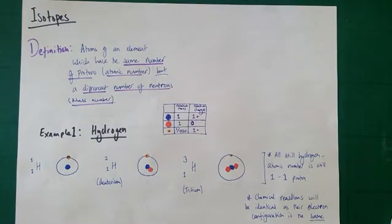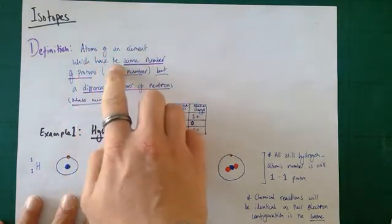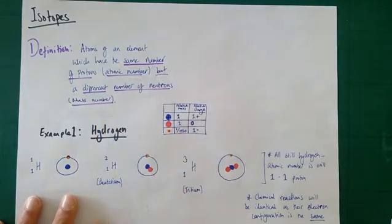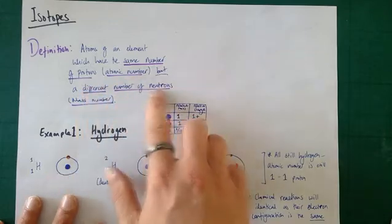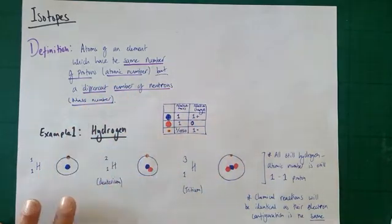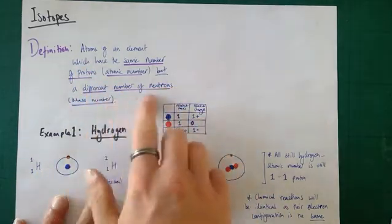This revision video is going to focus on isotopes. Isotopes essentially are different versions of an element which have slightly different masses. Specifically, you can define them as atoms of an element which have the same number of protons and therefore the same atomic number — that's the number at the bottom of the symbol in the periodic table — but a different number of neutrons in the nucleus. Therefore, they have a different mass number, which is the number at the top of the symbol for that element in the periodic table.